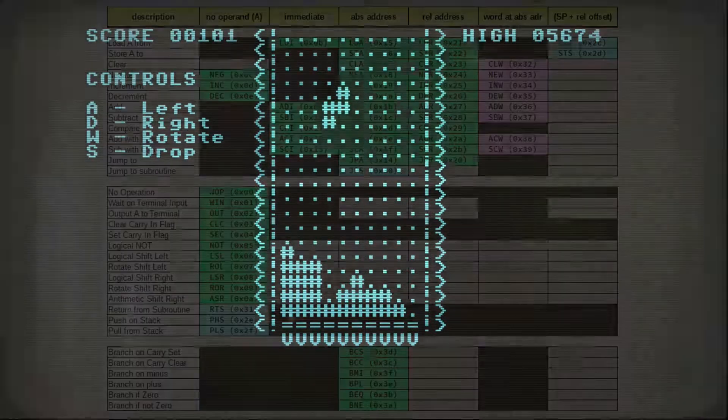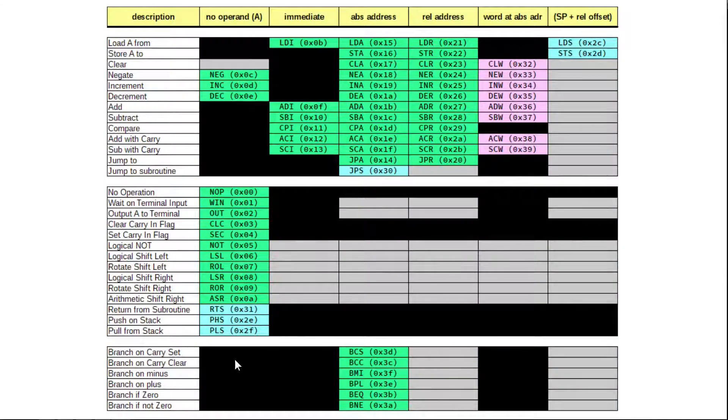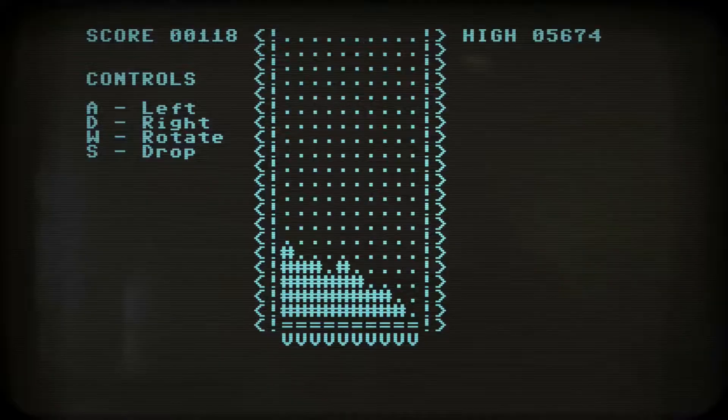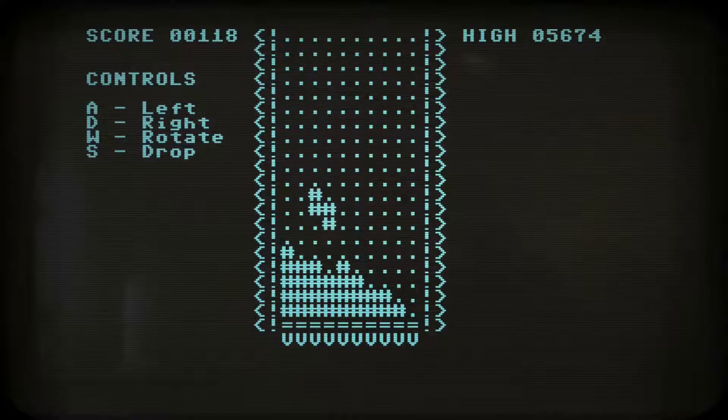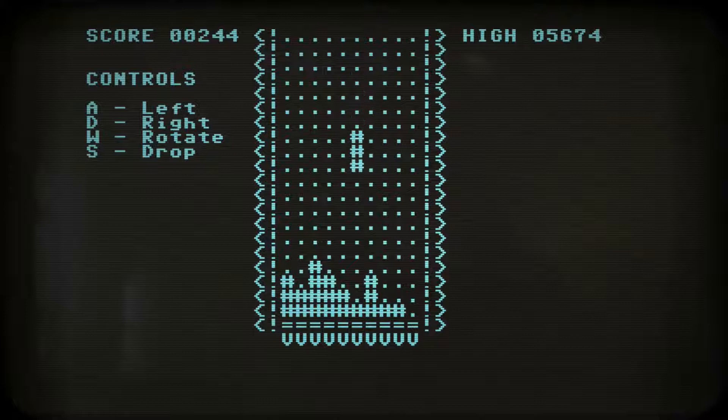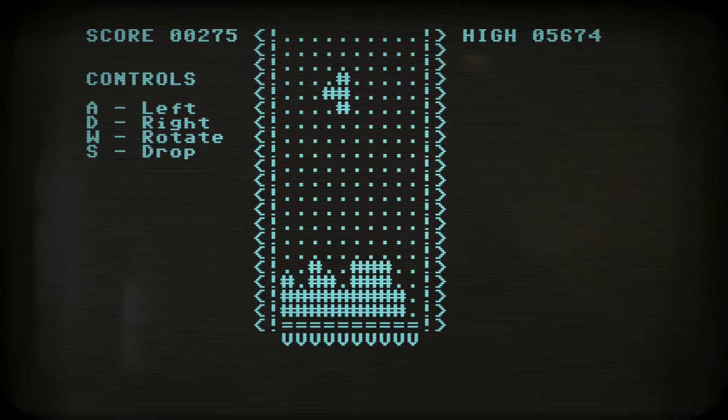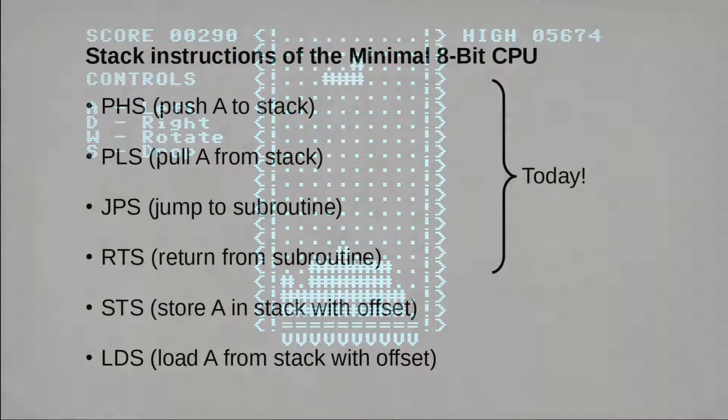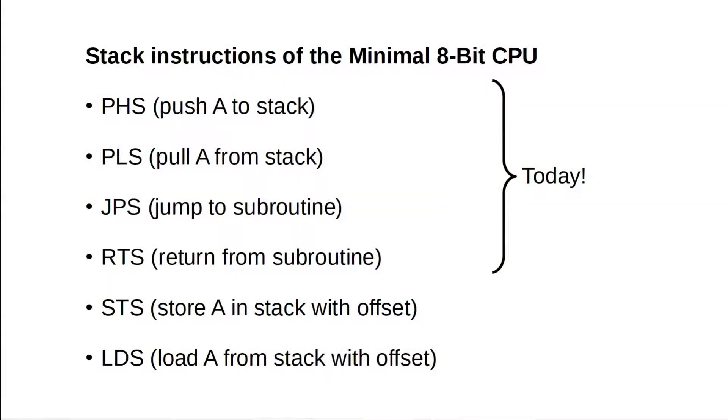Having said that, today let's implement some stack and subroutine instructions of my minimal 8-bit CPU, even though it doesn't even have a stack pointer. A CPU design that features stack instructions like jump to subroutine and return from subroutine allows us to structure and reuse sections of our code, so we can build upon our own work or the work of others.